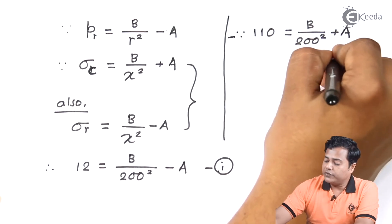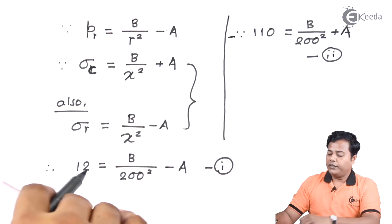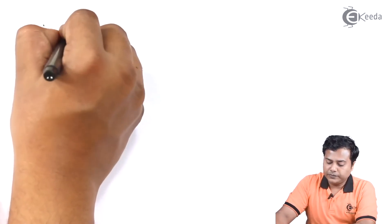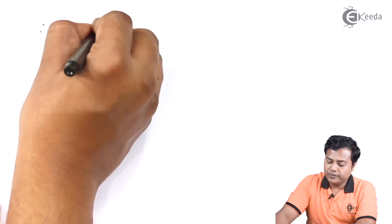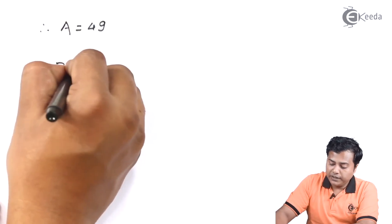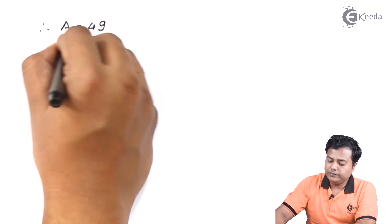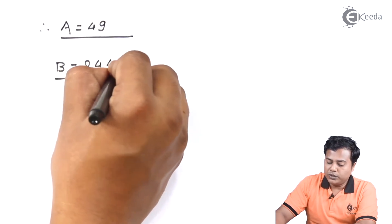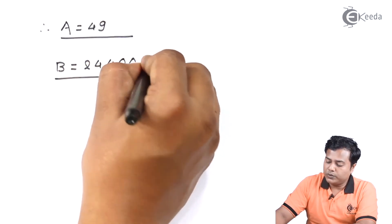Now in these two equations when I solve them I will get the value of A and B. So upon solving them I will get value of A as 49 and value of B as 2440000.